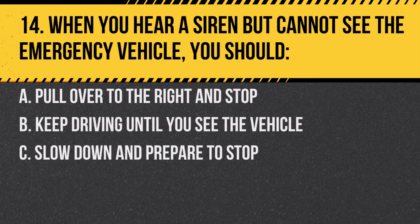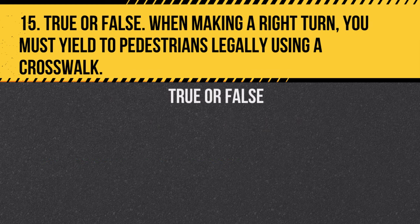Question 14. When you hear a siren but cannot see the emergency vehicle, you should: a. Pull over to the right and stop. b. Keep driving until you see the vehicle. c. Slow down and prepare to stop. Answer: c. Slow down and prepare to stop. Be alert and ready to yield.